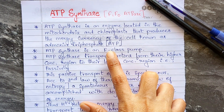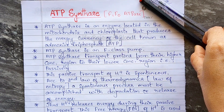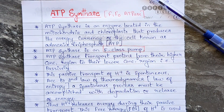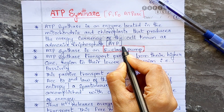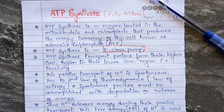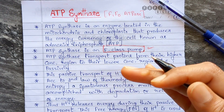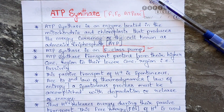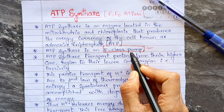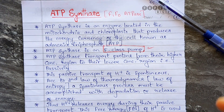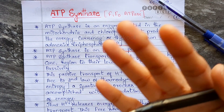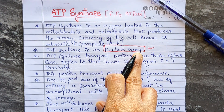ATP synthase is an F-class pump. I won't go into full detail here — that concept is covered in cellular organization when we study membrane structure and ion channels. Briefly, F-class pumps help in the transfer of protons from higher concentration to lower concentration. ATP synthase transports protons from a higher concentration region to a lower concentration region.